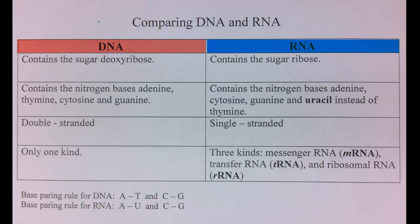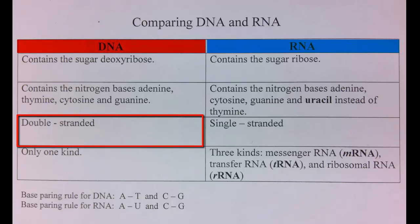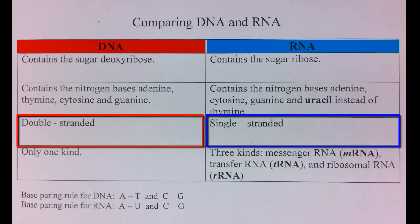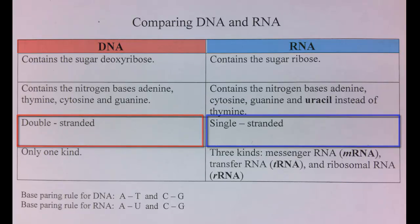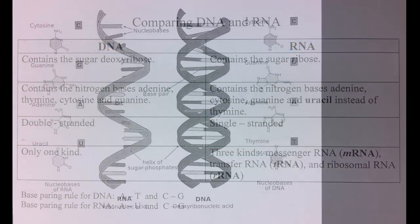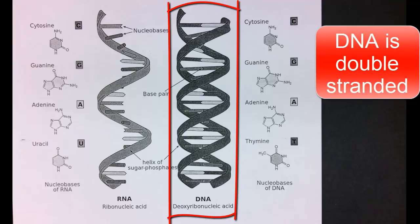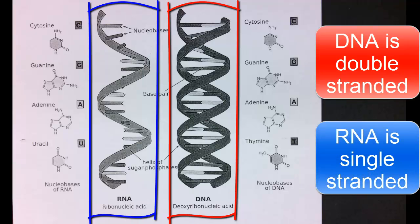DNA is a double-stranded molecule while RNA is only single-stranded. This means that DNA has two sugar phosphate backbones and base pairs in the middle, while RNA only has one sugar phosphate backbone with the bases coming off of the sugar molecule.